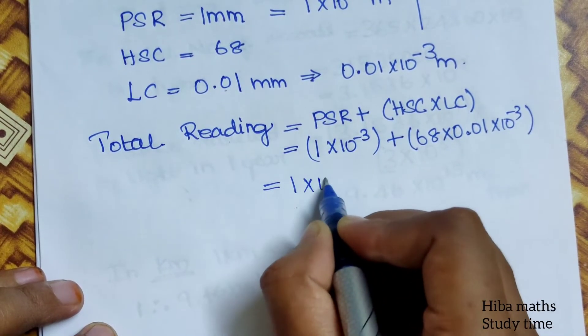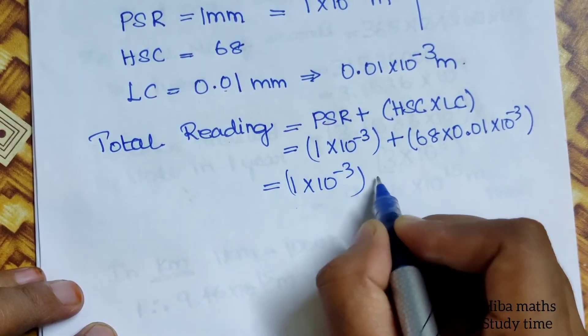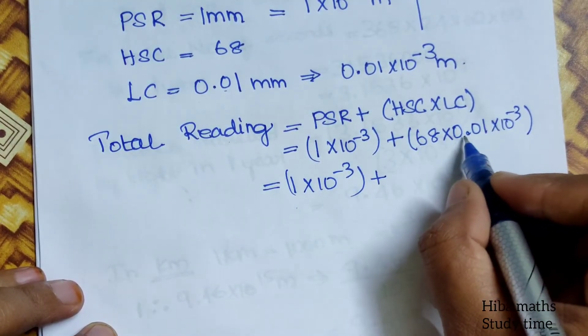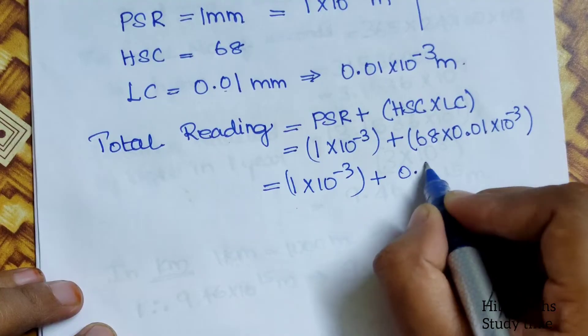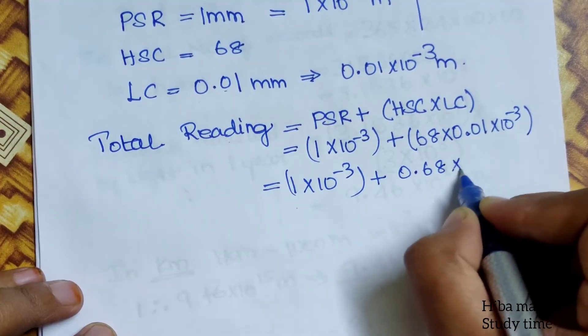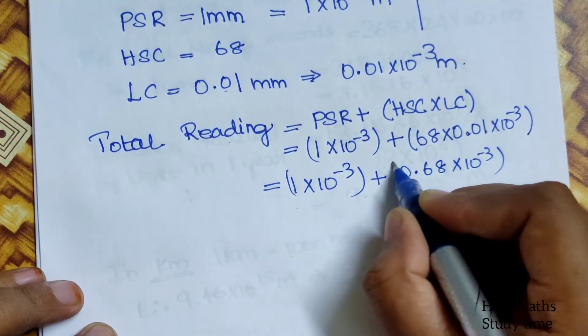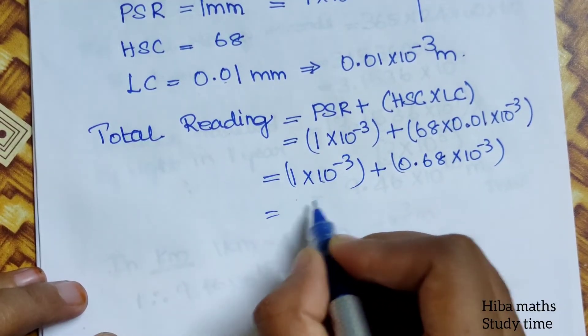Next step is 1 into 10 power minus 3, plus 68 into 0.01, which is 0.68 into 10 power minus 3.